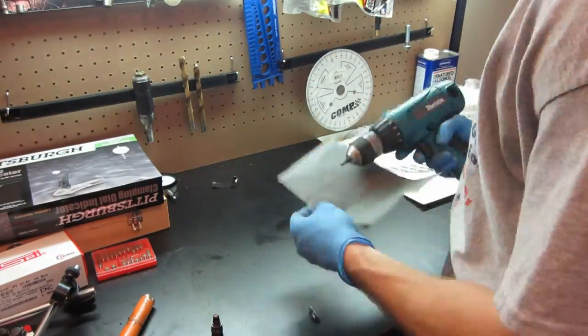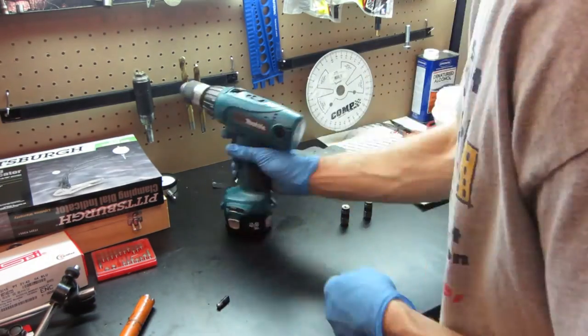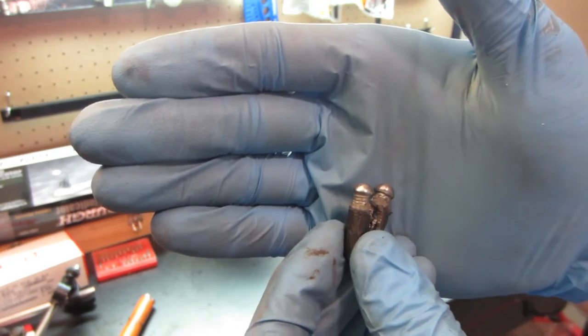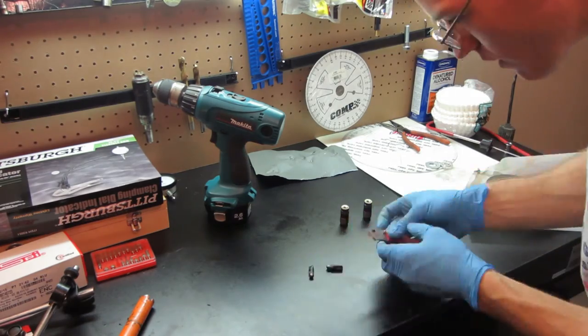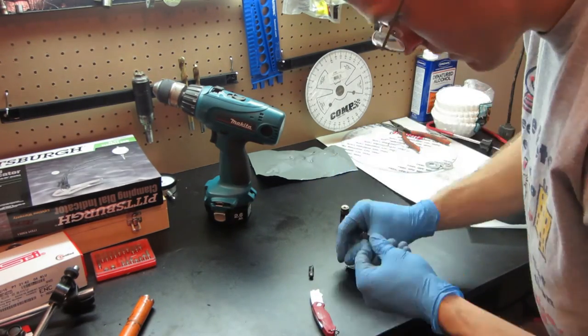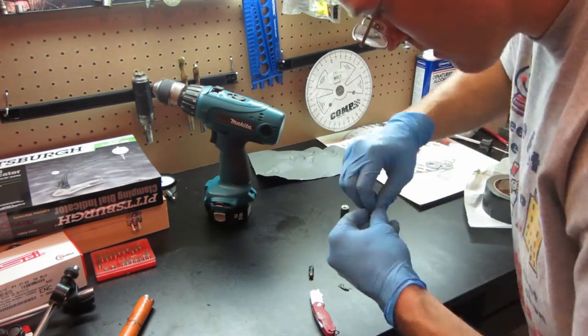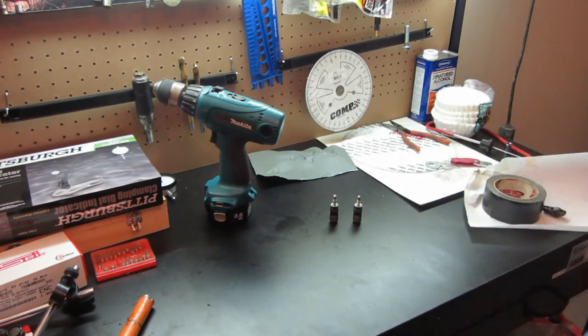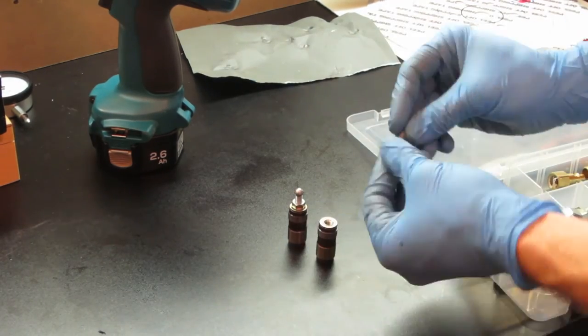Once you're done with the shaping, polish your creation to ensure you don't damage the rockers. Then check the fit into the rocker arm. Now all that's left to do is add a lock nut. Now you have adjustable lockable solid lifters that you can use for degreeing in your camshafts. Happy boosting!